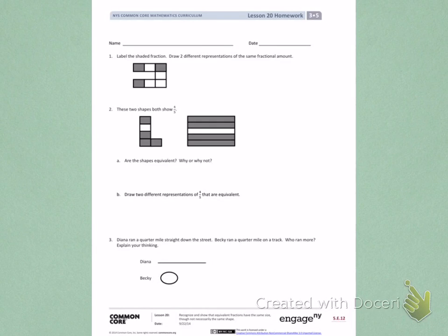This is Module 5, Lesson 20, Homework. Today's objective was to recognize and show that equivalent fractions have the same size, though not necessarily the same shape.